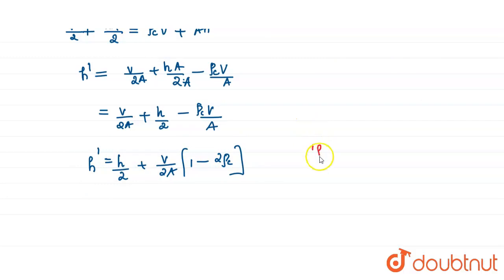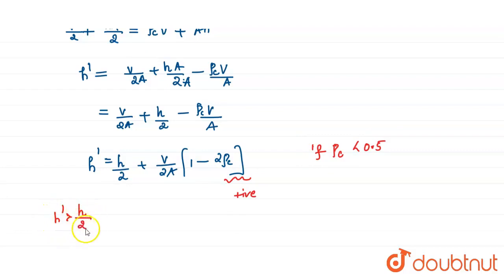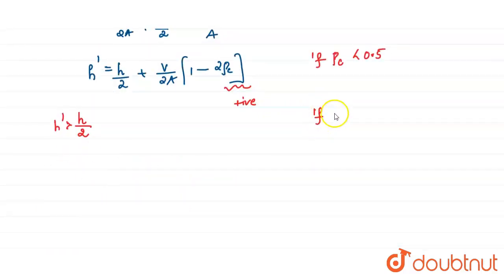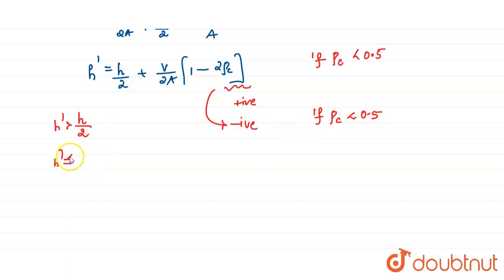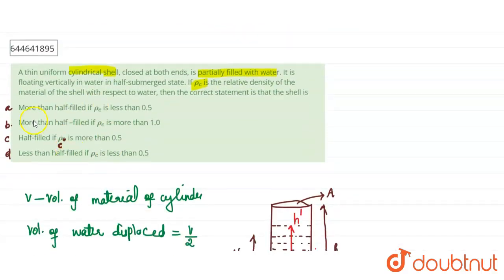Now, if ρC is less than 0.5, the bracket term (1 − 2ρC) becomes positive, so H-dash is greater than H/2 — meaning more than half filled. If ρC is greater than 0.5, the bracketed term becomes negative, so H-dash becomes less than H/2. Checking option A: more than half filled if ρC is less than 0.5 — this statement is correct. So our answer is option A.